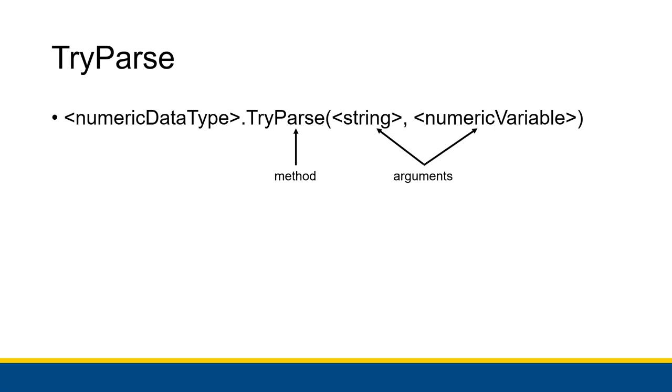Each numeric data type essentially has their own version of TryParse. And even though they're the same name, they work a little bit differently. The type of this variable should match this data type right here.